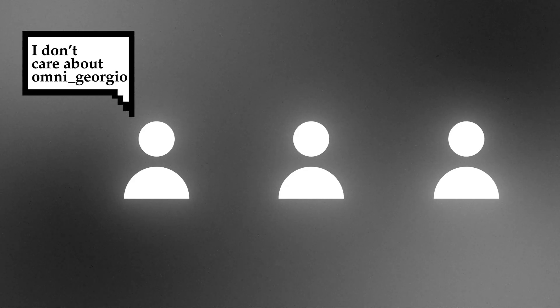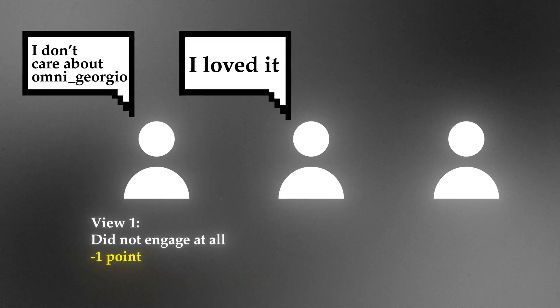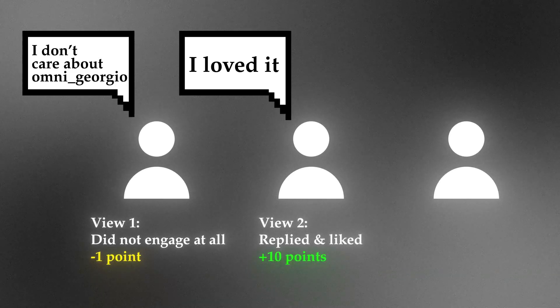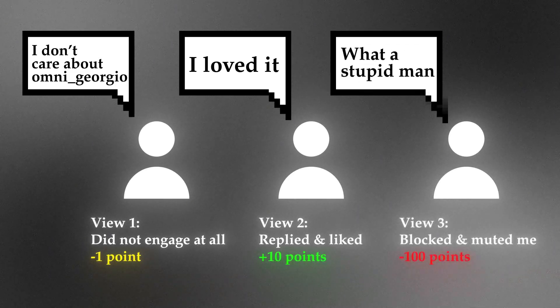Let's say our sample audience is three people. One user doesn't care at all — no engagement, minus one point. One user loved it, replied and liked it — plus 10 points. And one really didn't like it — they blocked and muted me, that's minus 100 points. Based on this scoring from the sample audience, X concludes: we've tested this with three people, people don't really like this content, so let's not recommend it further.